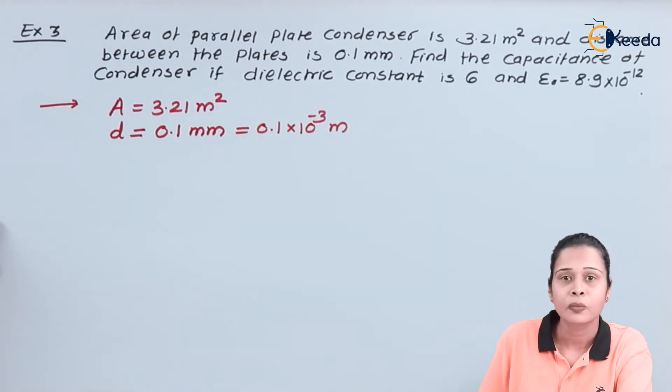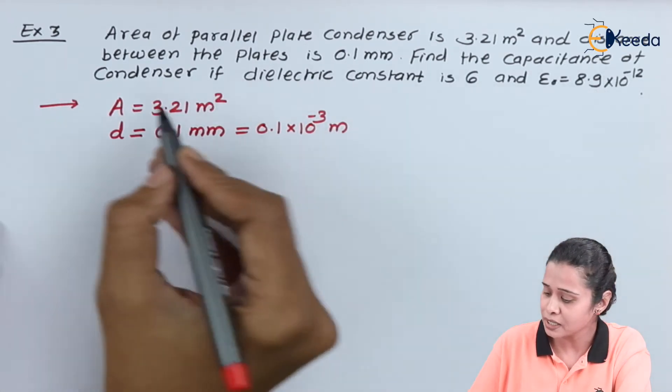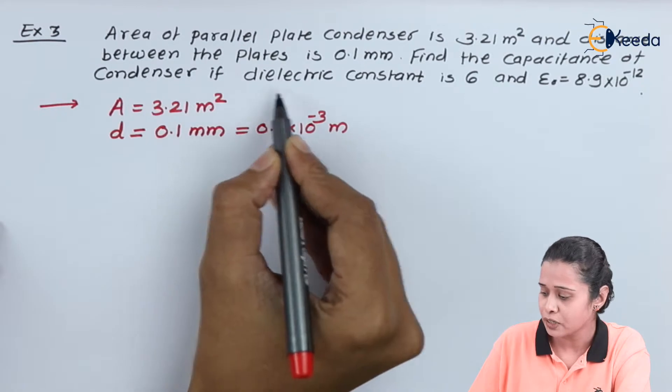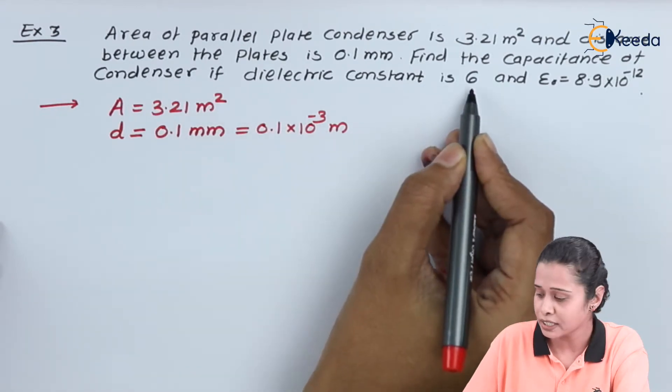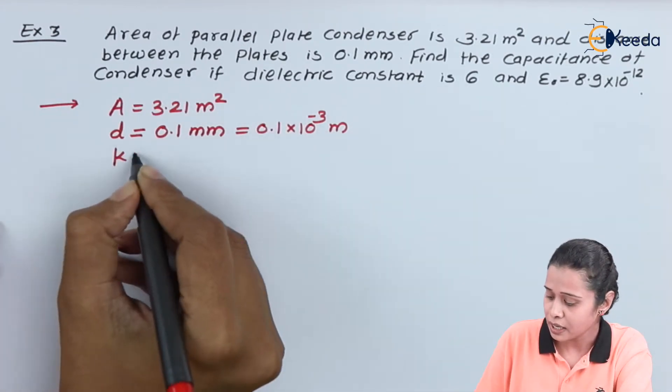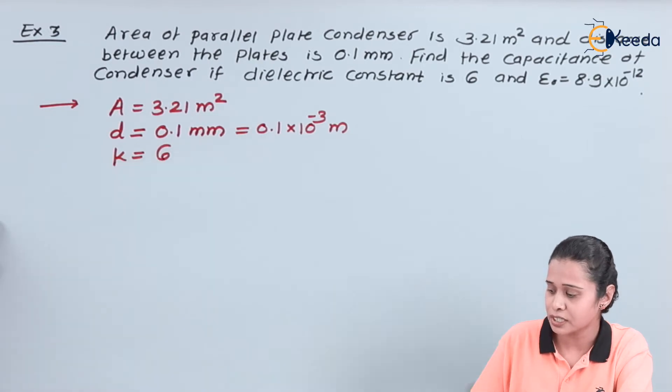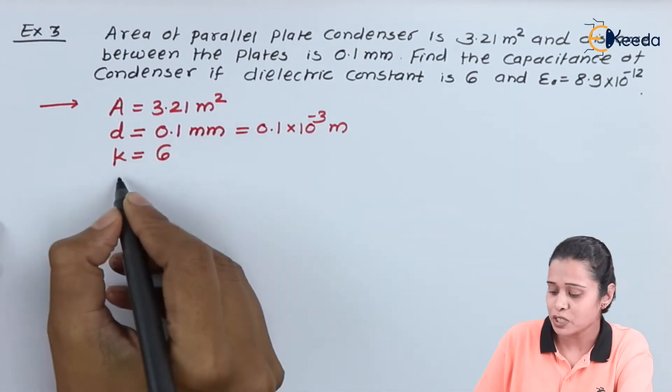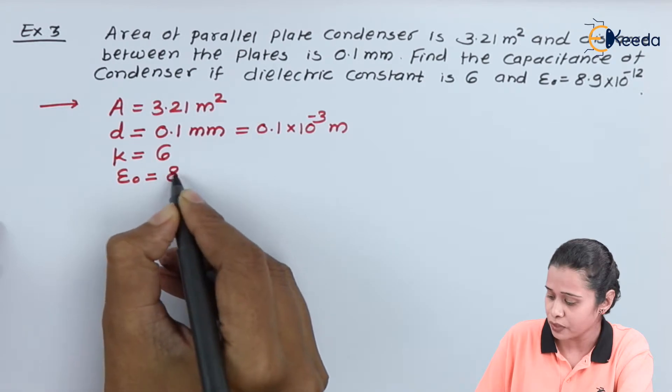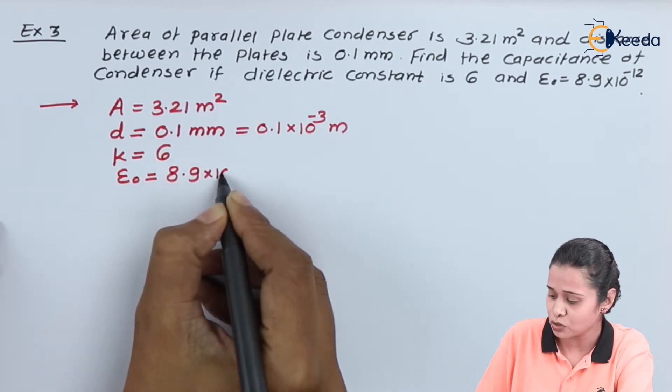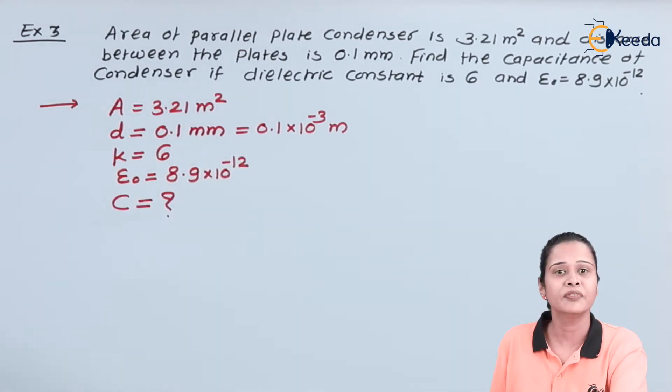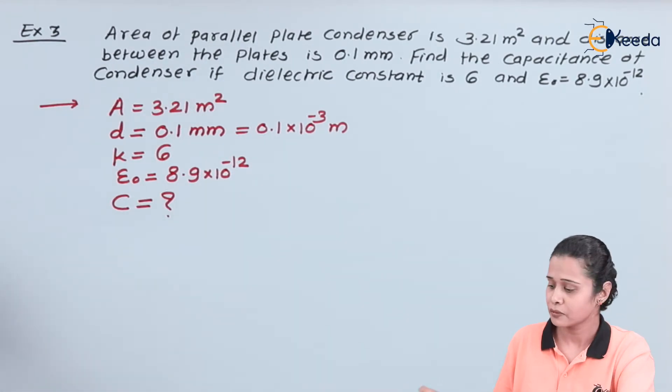Find the capacitance of condenser if the dielectric constant is 6, and epsilon naught that is permittivity of medium is also given 8.9 into 10 raise to minus 12. Here we have to find out what is the value of capacitance.